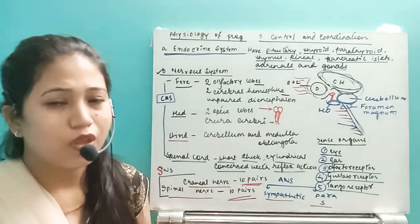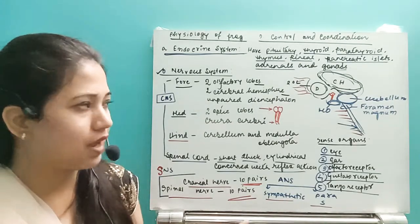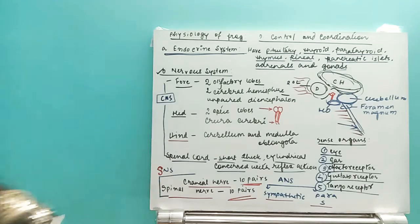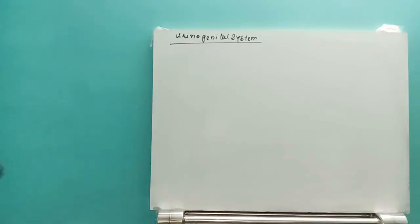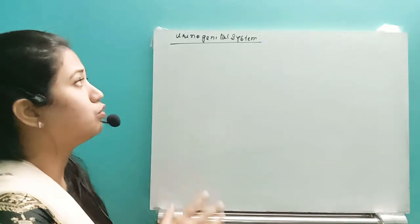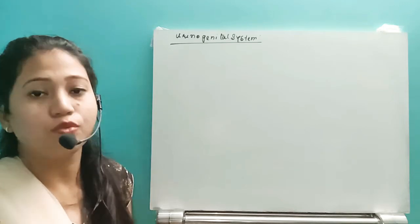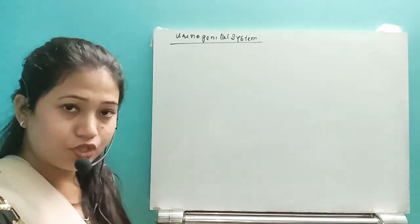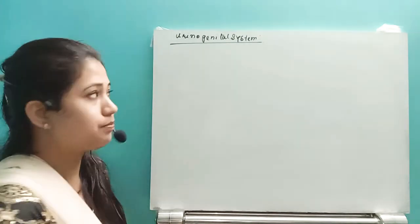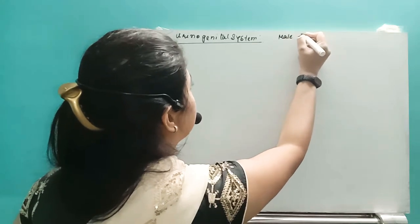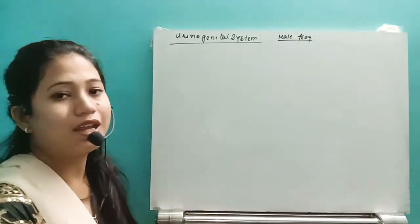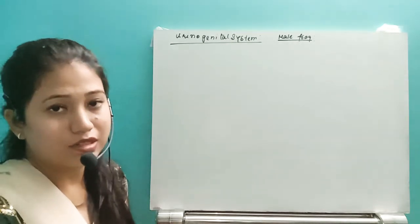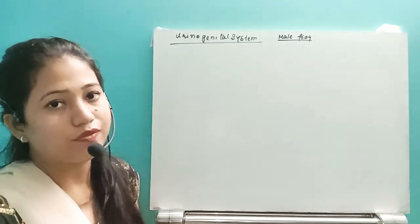Along with that, we have seen the endocrine system. After that, let us move to the next system — the urinogenital system. The reason I have merged both the excretory system and the reproductive system together is that in the case of the male frog, the excretory system and reproductive system are present together. The ureter collects both gametes and urine together. That is why we will see both of them together.